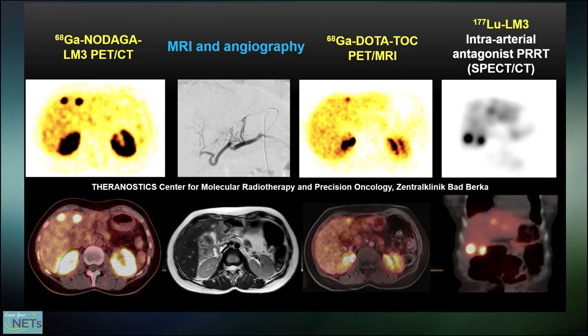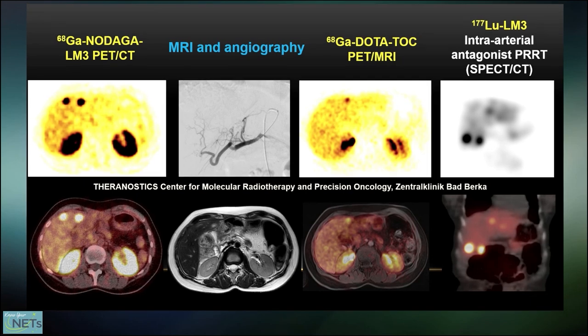This is a patient which has very faint uptake on DOTA-TOC PET-MR. As you can see, there is only one very faint liver metastasis in the upper rows, the second image on the right, whereas on the Nodaga-LM3 PET-CT, you see very strong uptake, which translates also into a very high uptake seen on SPECT-CT after therapy in this patient.